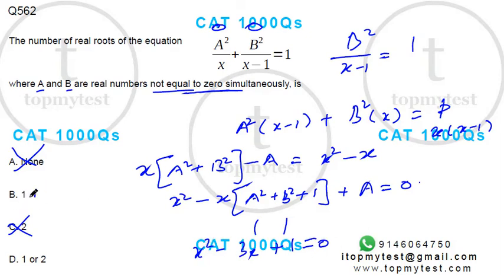So you cannot say it's only one root, option D is your correct choice. Simple application of your concept of quadratic equations and simple equation. You cannot be sure that both of them are not zero. But what you're definitely sure is both of them cannot be zero simultaneously.